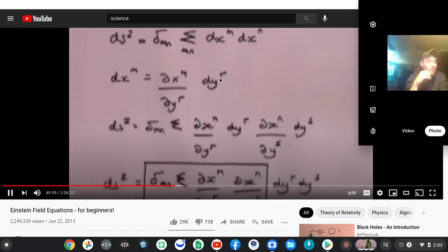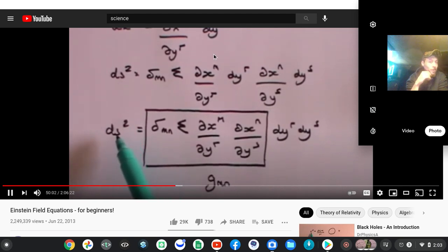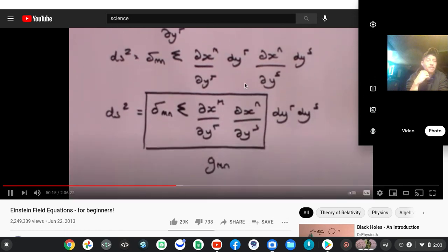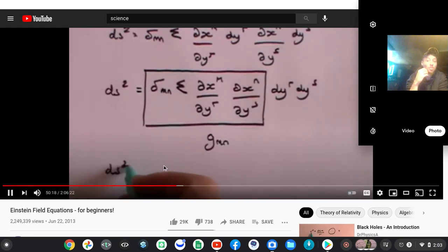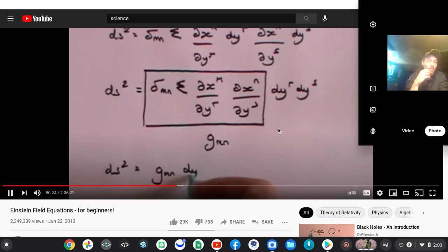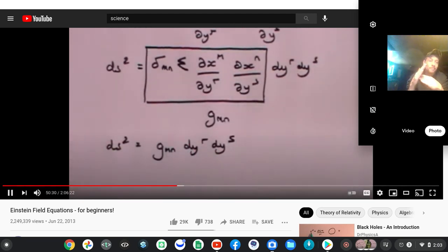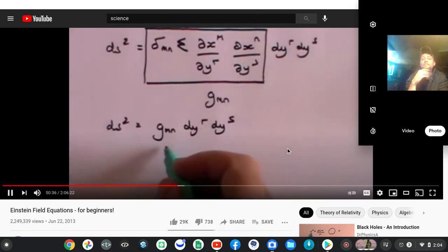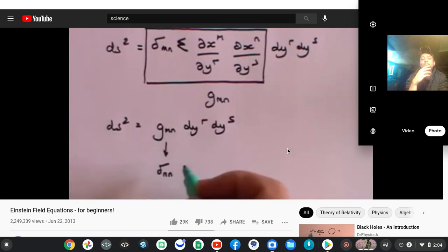That ds squared equals the summation, gmn contains a summation term. For flat space it's pretty obvious that gmn is simply going to reduce to the Kronecker delta term, delta mn. So it will be one when r equals s and it will be zero when r doesn't equal s.